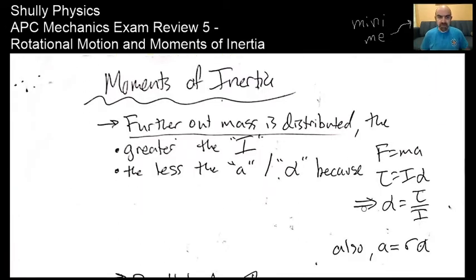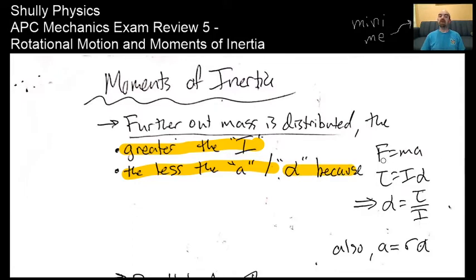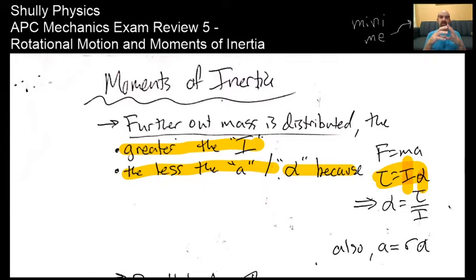Moving into moments of inertia: the further out the mass is distributed, the greater the moment of inertia, and the lesser the angular acceleration, because of Newton's second law for rotational motion. Instead of F equals ma, we have torque equals I alpha. So for a given unchanging torque—like the weight of an object being pulled down a hill—the greater the I and the lower the angular acceleration. The weight is the same whether the mass is distributed far out or close in.